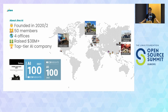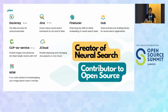Let me introduce Jina AI — it's my company. We are an open source company founded during the pandemic in 2020, with around 50 members distributed across four continents, mainly based in Europe but with offices in China and the US. We raised a total of 38 million and are a top tier AI company. We have multiple open source projects and an ecosystem around multimodal applications and neural search. Today I will mainly talk about DocArray and Jina, two of our open source projects.